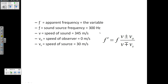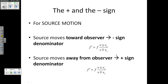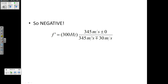Taking these variables and our formula, we can plug them in. We have our plus-or-minus to resolve. The source — the car — is moving towards the observer, so according to our rules for the source, we use a negative sign in the denominator. So it becomes 345 minus 30 in the denominator, giving us 315 meters per second. The numerator stays at 345 meters per second, since Vo is zero.